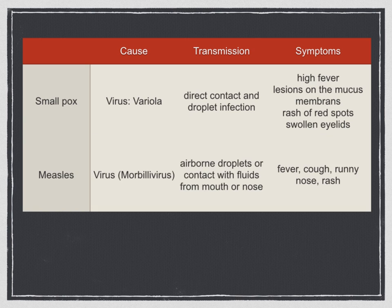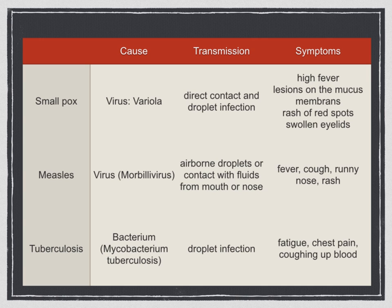Measles is caused by a virus. It is transmitted by airborne droplets or contact with fluids from the mouth or nose. Symptoms include fever, cough, runny nose and rash. Tuberculosis is caused by a bacterium, Mycobacterium tuberculosis. It is transmitted through droplet infection. Symptoms include fatigue, chest pain and coughing up blood.